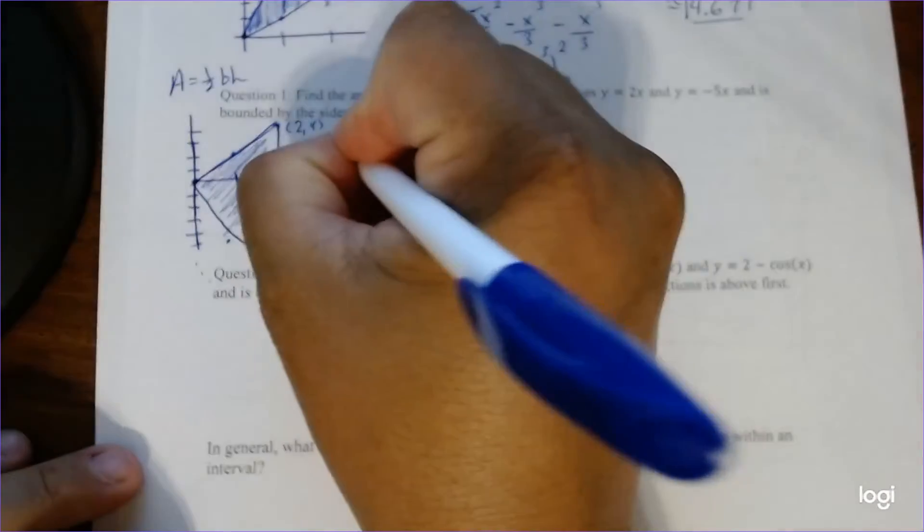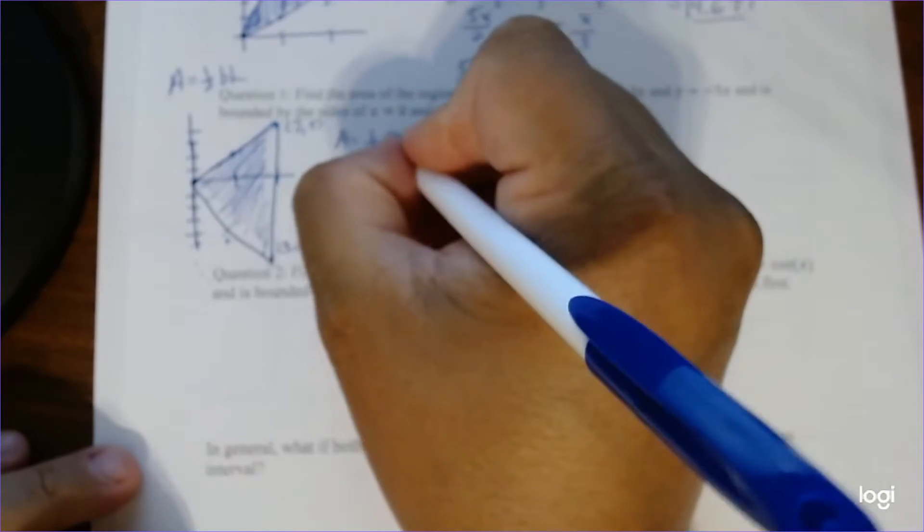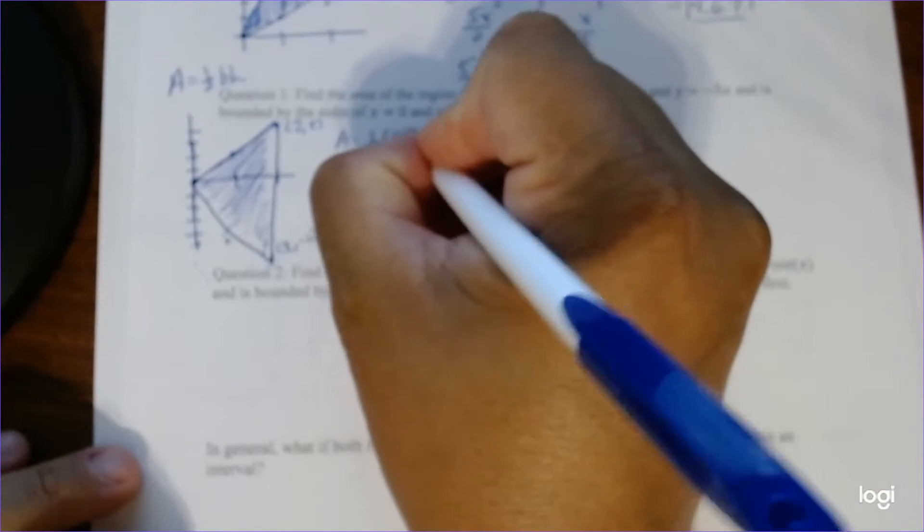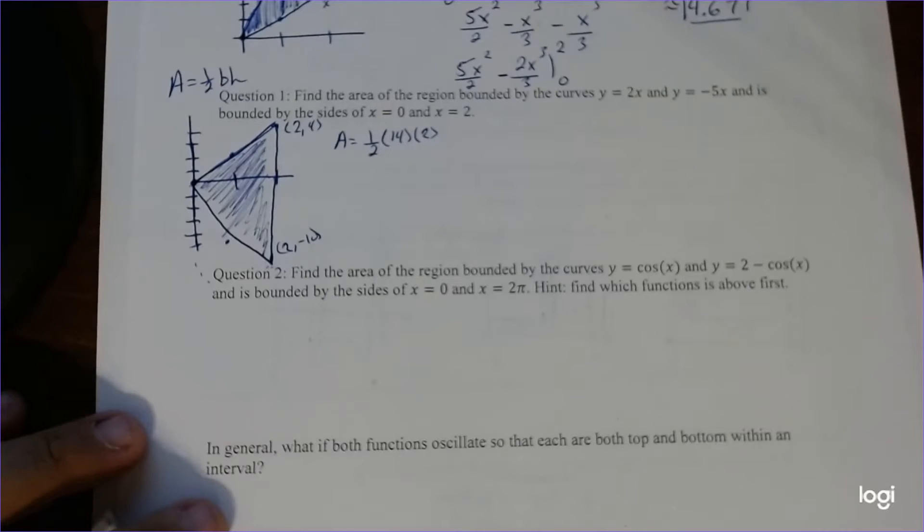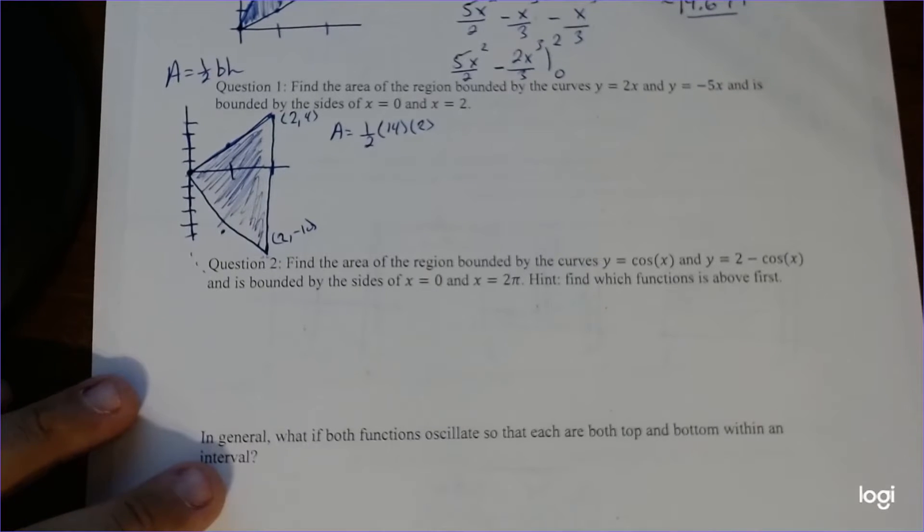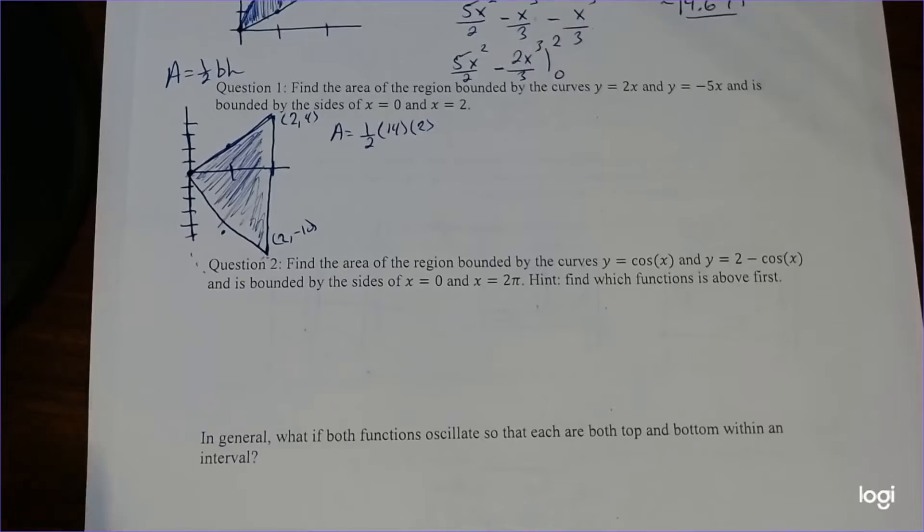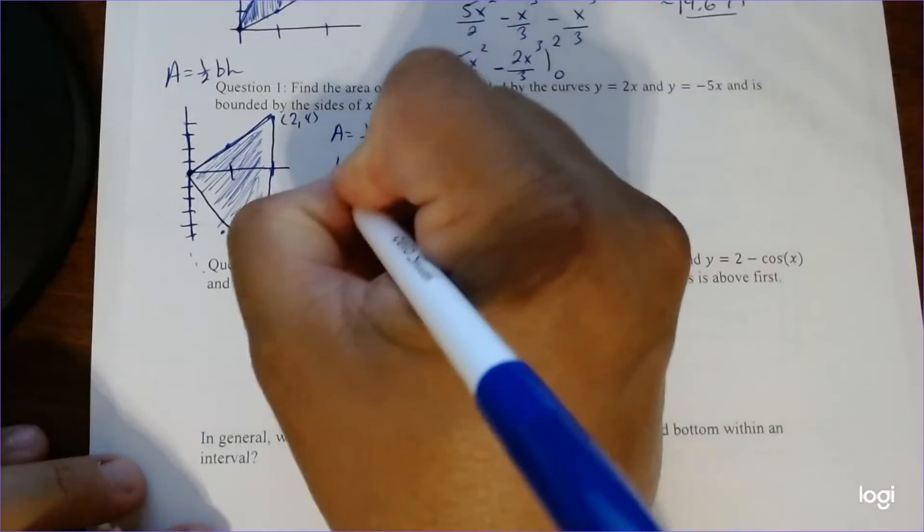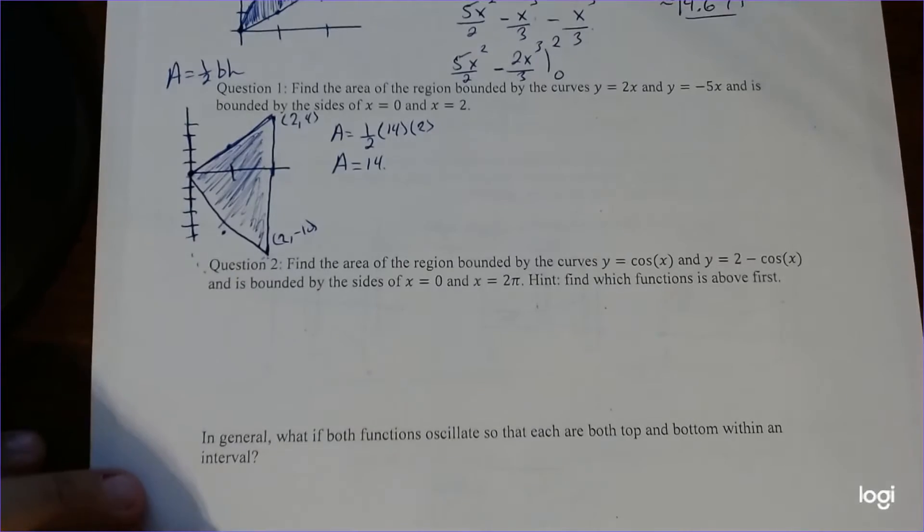So the area is 1 half the base, which is going to be 14 times the height, which is 2. So that's one way to actually figure it out when it comes to it. So that gives you just 14.